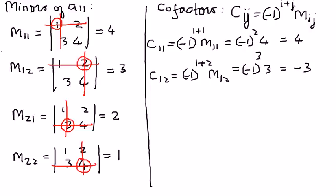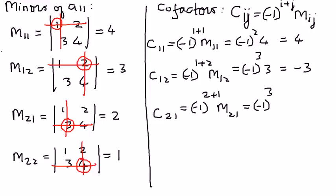Let's find C21, the cofactor of element A21. C21 equals negative 1 raised to the power of 2 plus 1, times M21. Negative 1 raised to the power of 3 is negative, and M21 is 2 from the left-hand side. Therefore, C21 is negative 2. As you can see, the minor M21 is positive 2, and the cofactor of element A21 is negative 2.